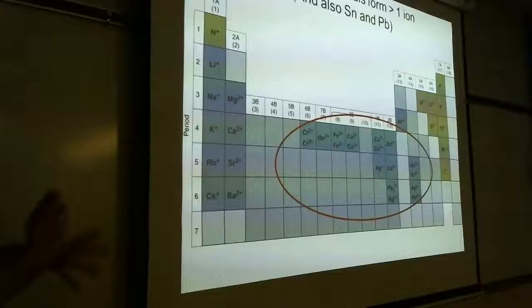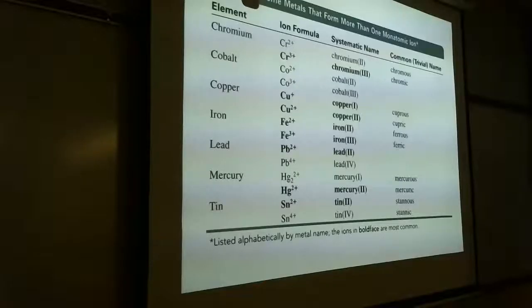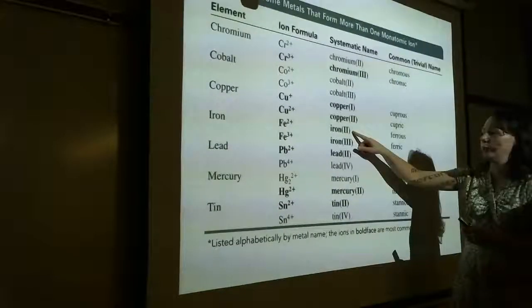Practice: AlCl₃ is aluminum chloride. Li₃N is lithium nitride. MgO is magnesium oxide. Any questions on how we name these? Cation first, anion second — these are ionic substances because they have one metal and one non-metal.